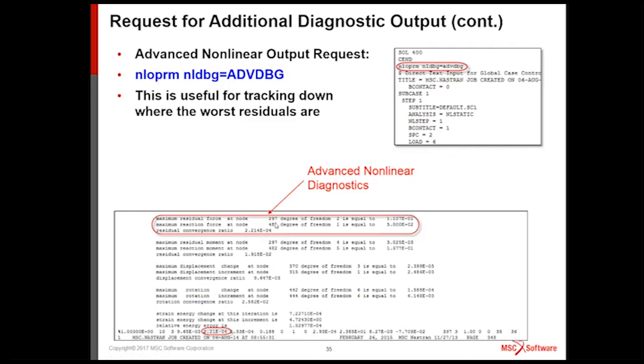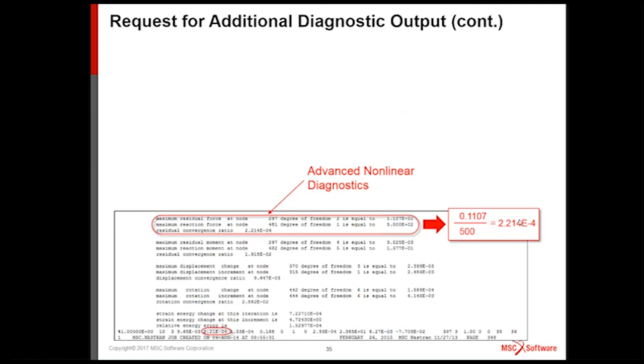So when you turn on the advanced debugging, what we do is we show you at each iteration what that worst residual is. So you can see here, now there's something going on in node 297. That's the highest residual force. And the highest reaction force is node 481. By the way, if you have contact, the contact forces now count as reaction forces. So contact forces will show up in the denominator here. So you take the numerator, divide it by the denominator, like I showed you earlier. There's a ratio. The reason I want to show you this is this will tell you where the trouble problem is, trouble area. If it really doesn't converge, let's go investigate around node 297. See if something's happening there locally.